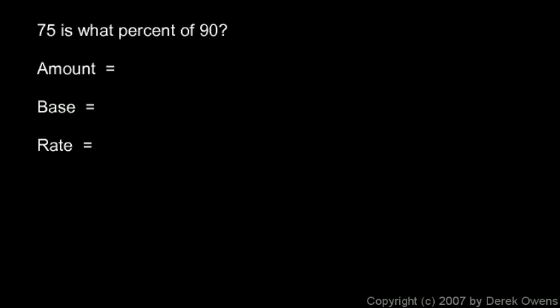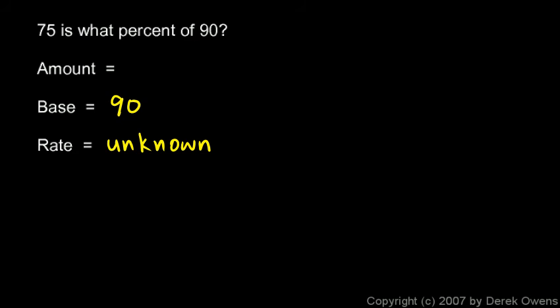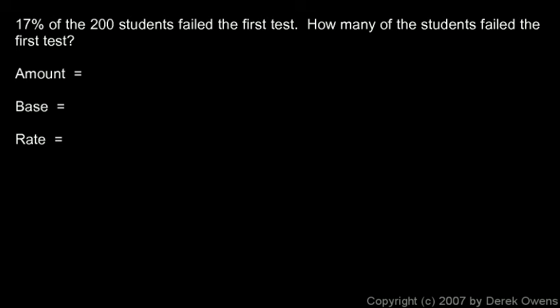Here we're asked: 75 is what percent of 90? We want to identify the amount, base, and rate. 'What percent' — we don't know the percentage, so the rate is our unknown. 75 is what percent of 90 — 90 is the total, so the base is 90. And 75 is the part of 90 we're looking at, so the amount is 75.